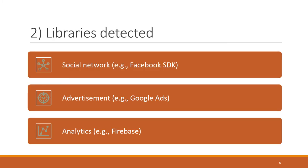The next thing we look at is which libraries are embedded in these applications, focusing on those potentially accessing sensitive resources. We include social network libraries such as the Facebook SDK, advertisement libraries such as Google Ads — because they are likely to collect location data or unique identifiers to provide targeted advertising — and analytics libraries such as Firebase, because they often collect unique identifiers to link user actions to individual users and understand how they interact with applications.